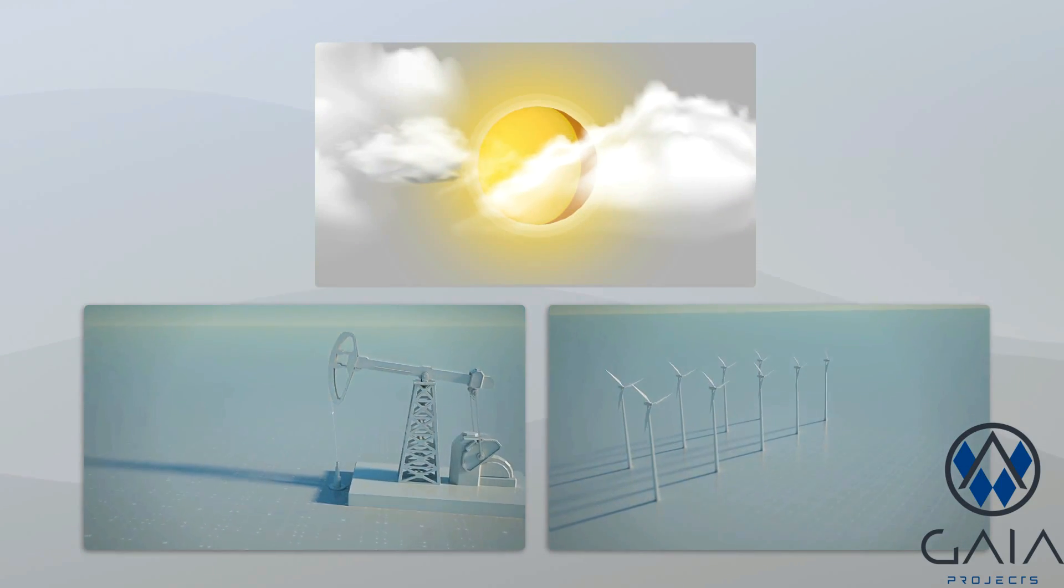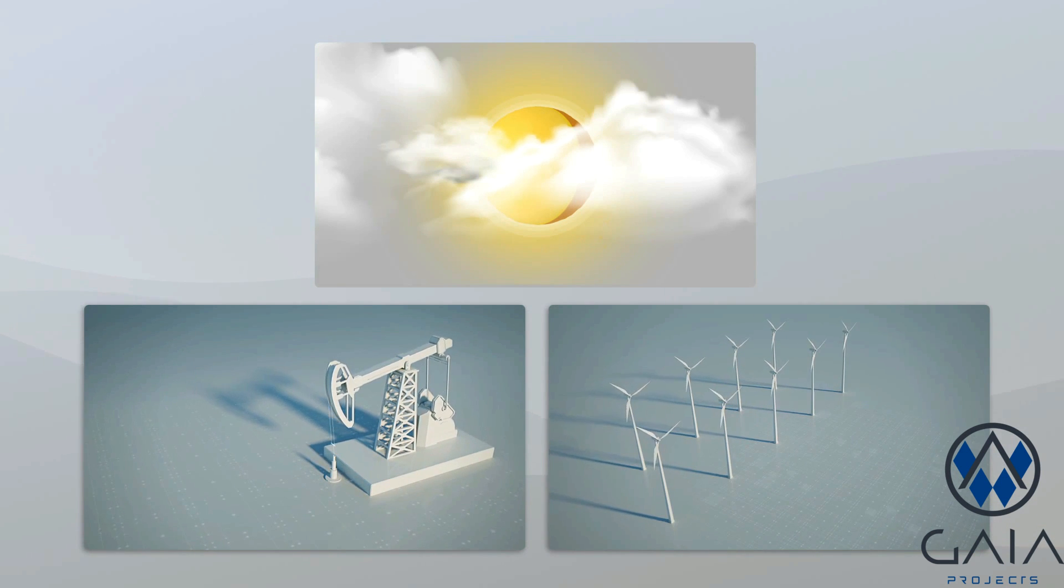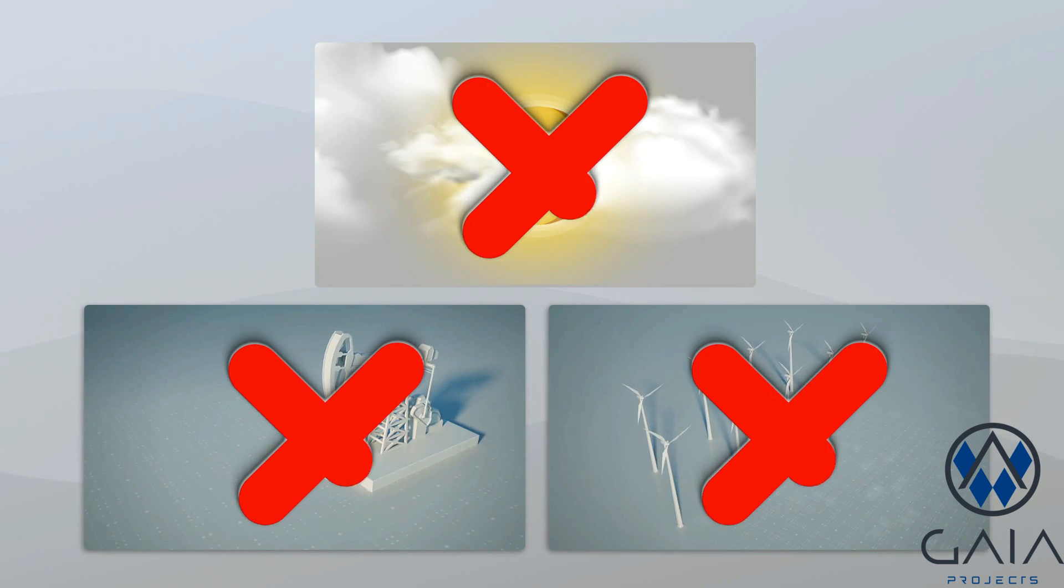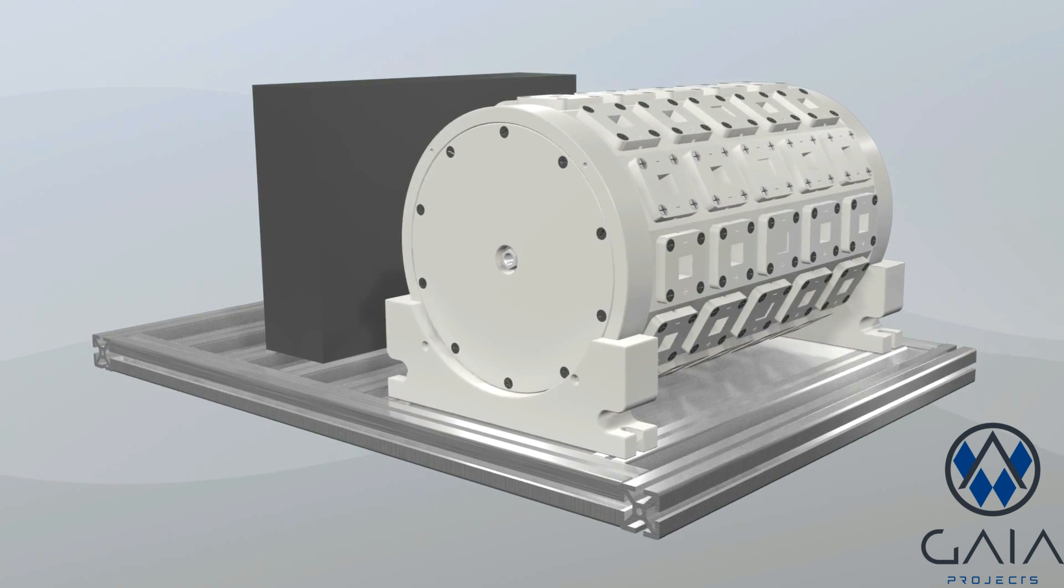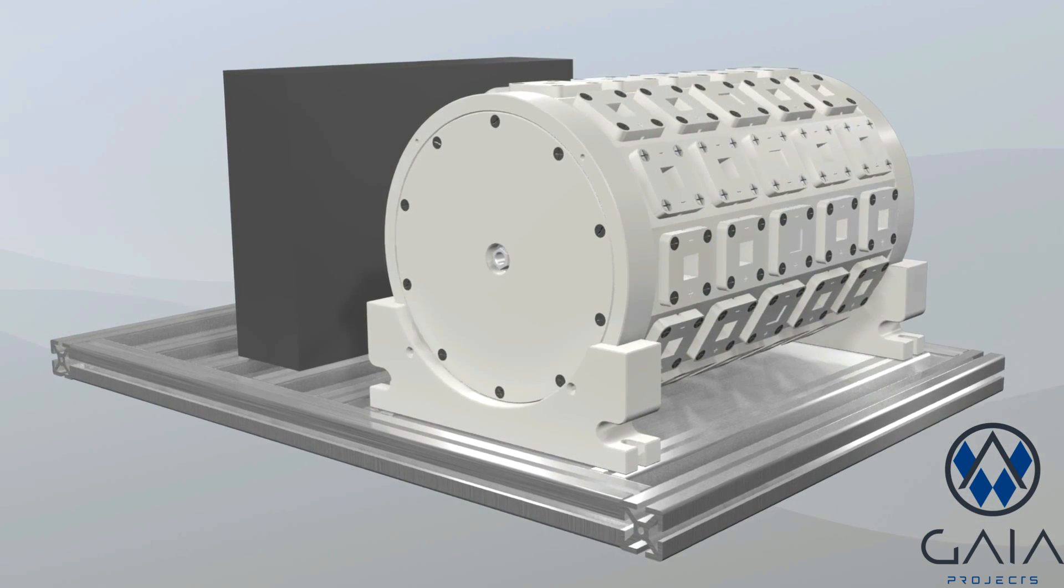It is common knowledge that for energy production we need to constantly use fossil fuels, wind, or sun. What if this is no longer true? Our GBI power unit doesn't need constant supply of any of these.